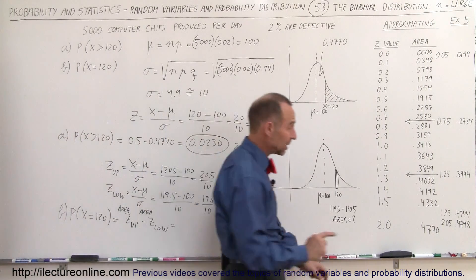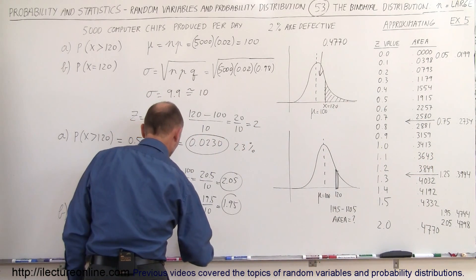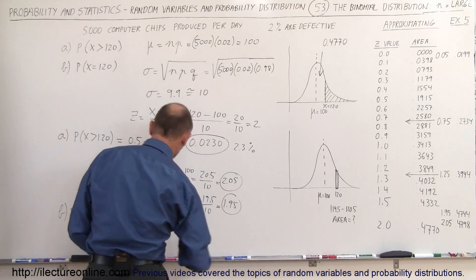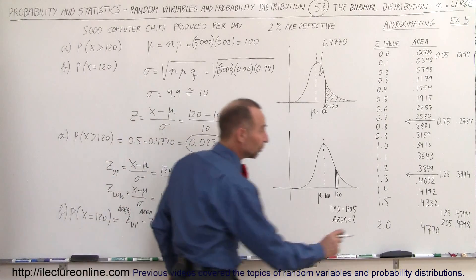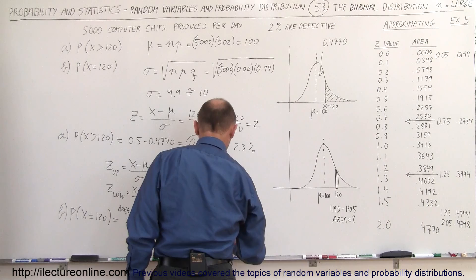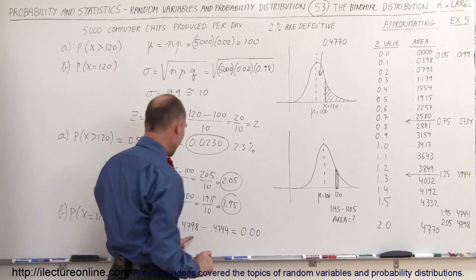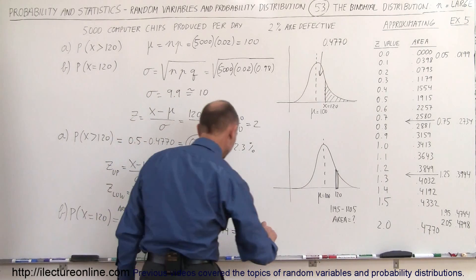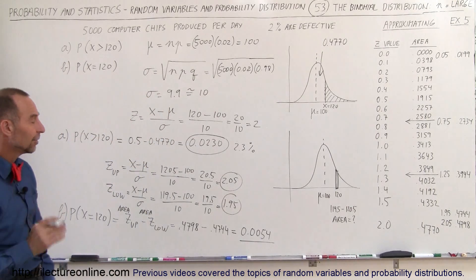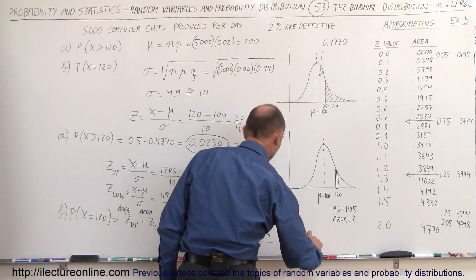which is 2.05, which is 0.4798, minus the area of the lower limit, which is 0.4744. So 0.4798 minus 0.4744, which is equal to 0.0054. And so that would be the probability that exactly 120 would be defective, which is equal to 0.54%.